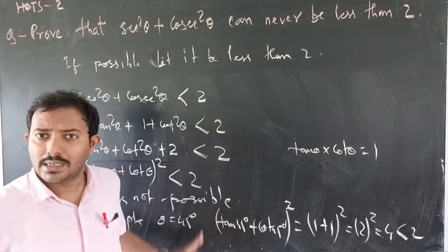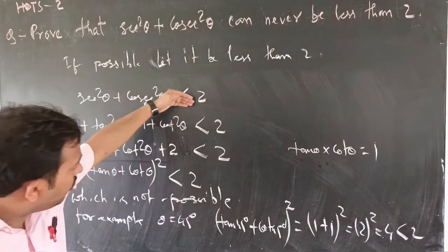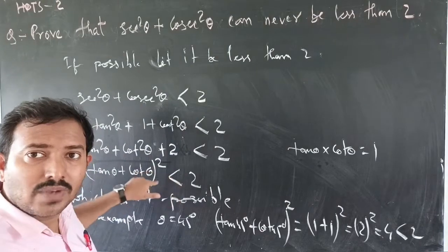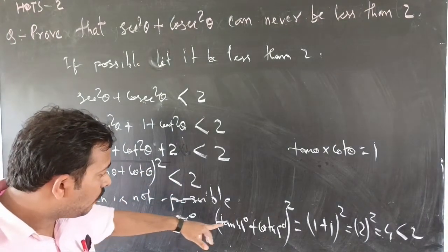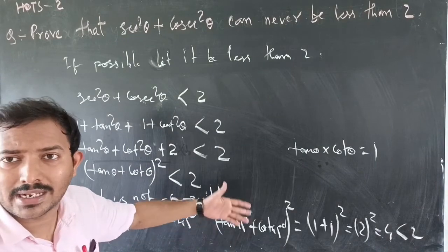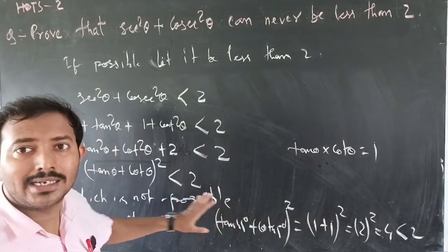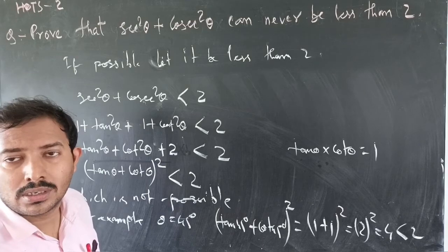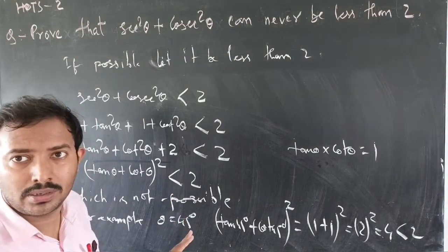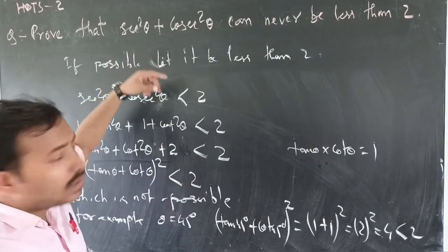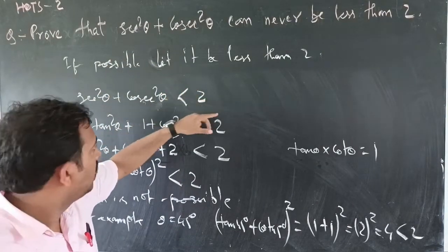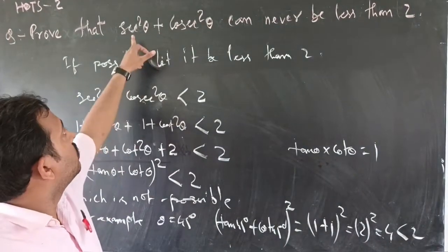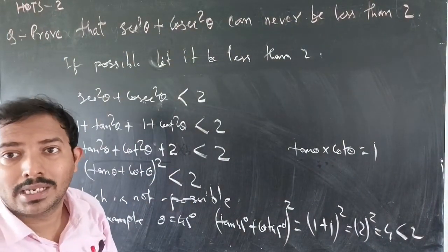How can it be possible? No, it is not possible for this angle. This is an inequality, not an identity. We can see that for angle 45 degrees it is not valid, and there are many angles for which this inequality is not valid. So this assumption is not possible. This is the contradiction method — we assumed less than 2, but we can see that it is not possible. Therefore, sec squared theta plus cosec squared theta can never be less than 2.